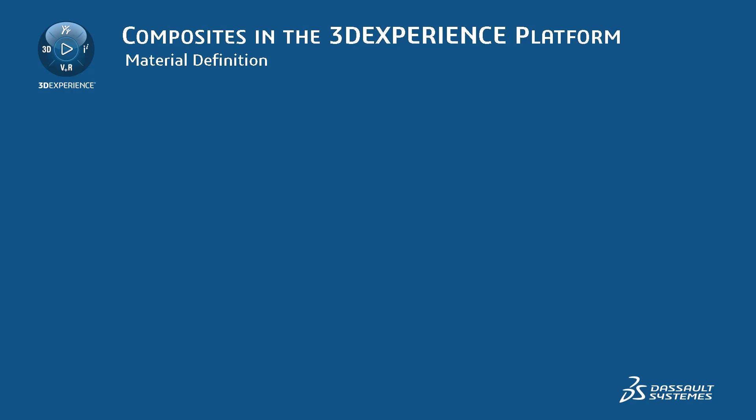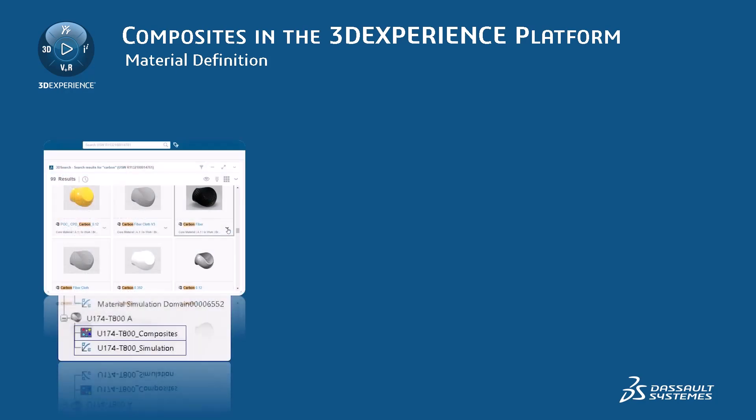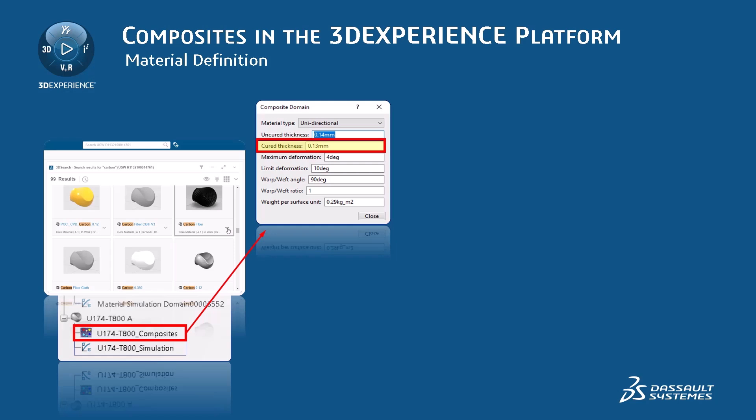Composite design starts with material definition. All material data is created, stored, and accessed on the 3DEXPERIENCE platform. Any composite model requires at least one defined material. Users can easily reuse materials from a library, or add, edit, or remove material properties from the material database. If editing material properties, these changes may propagate to all reference models. When creating new material, four separate domain types exist: Appearance, Drafting, Composite, and Simulation. To model elastic composites, the material definition must contain a Simulation domain along with a Composite domain. The Composites domain defines the thickness of the ply and other properties used during the manufacturing producibility analysis. The cured thickness is used for the engineering stacking in the CATIA composite model and section properties during Simulia simulations.